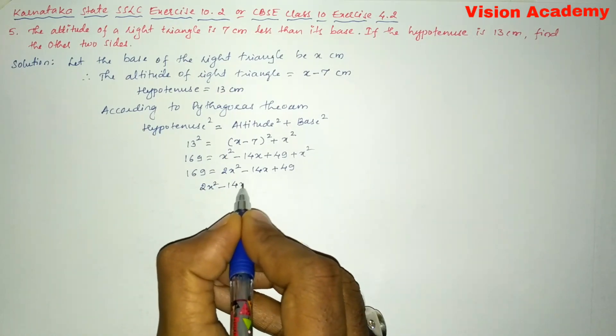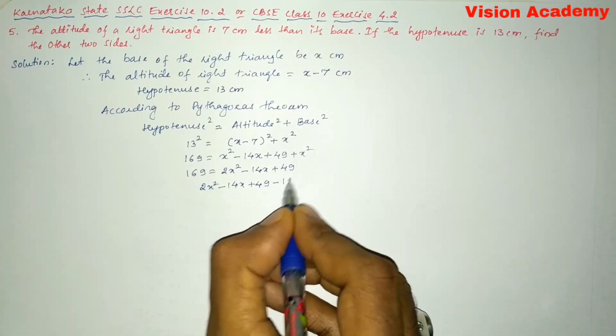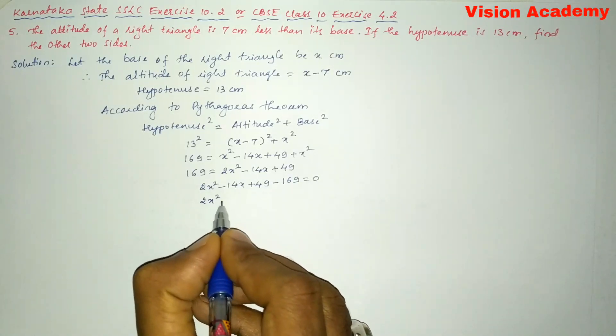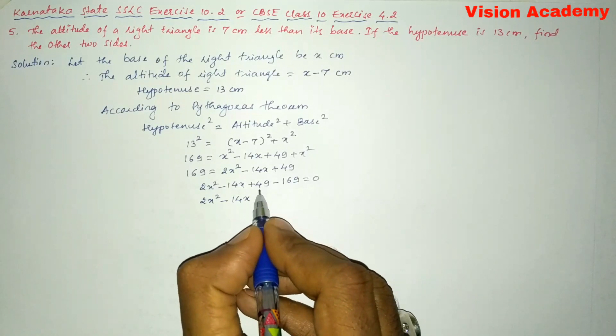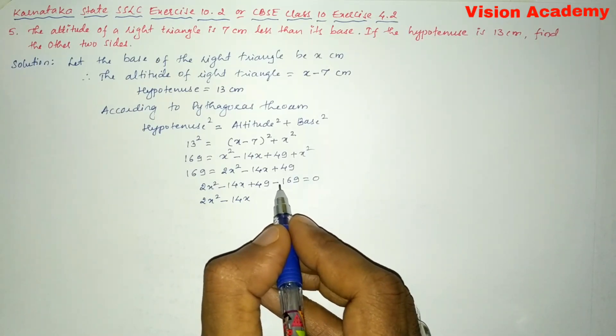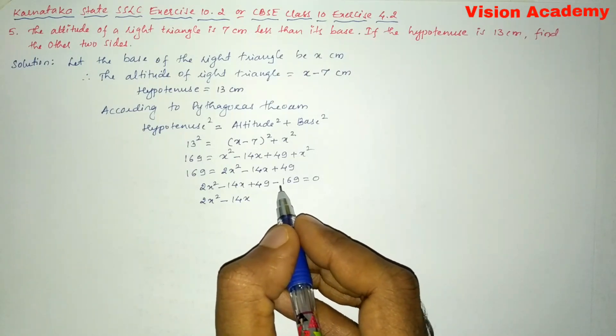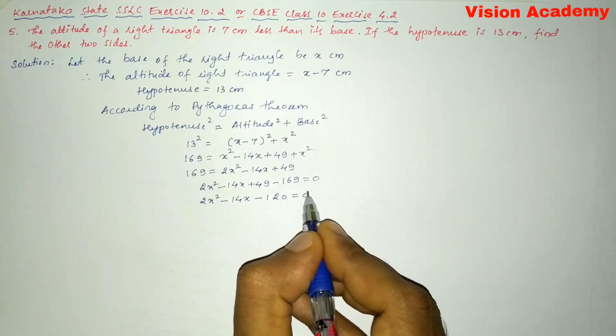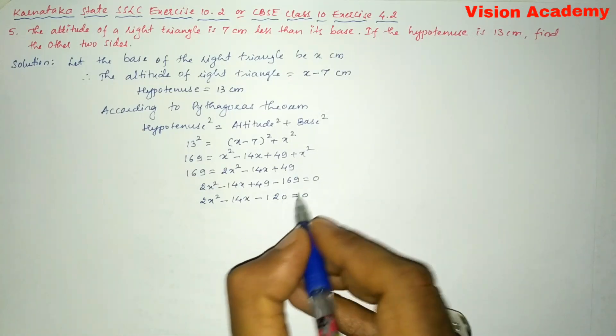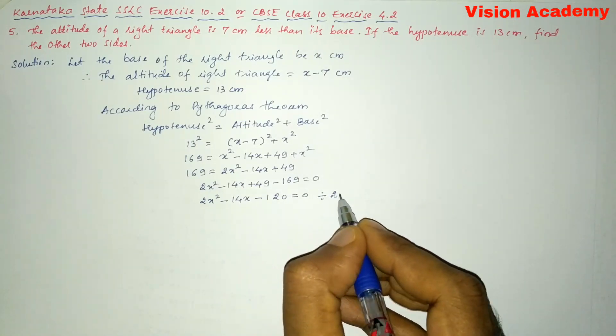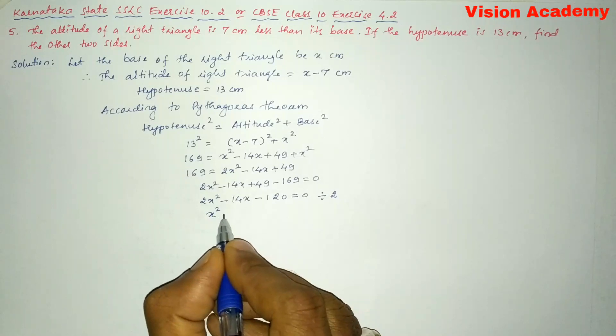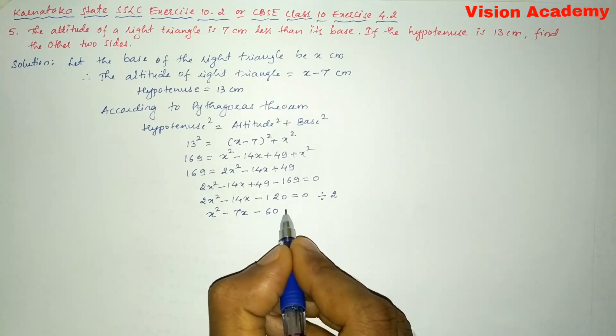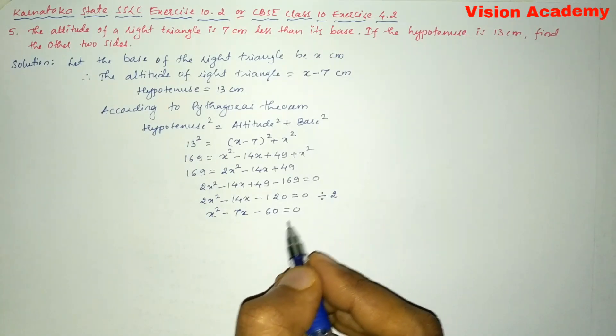Now it will become 2x square minus 14x plus 49 minus 169 is equal to 0. So here we are going to further simplify 2x square minus 14x. Here 49 minus 169 gives us 120. So that is minus 120 is equal to 0. So you can see all of these terms can be divided by 2 so let us divide throughout by 2. So here we remain with x square minus 7x minus 60 is equal to 0.